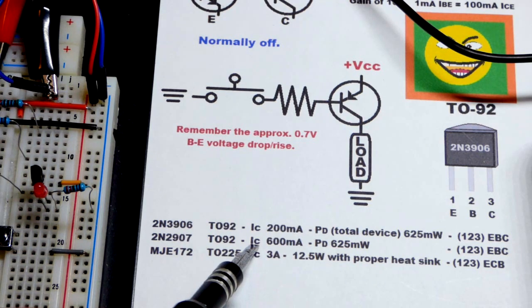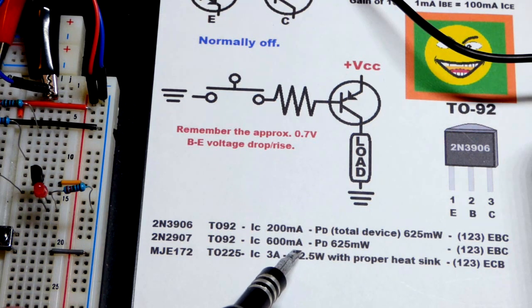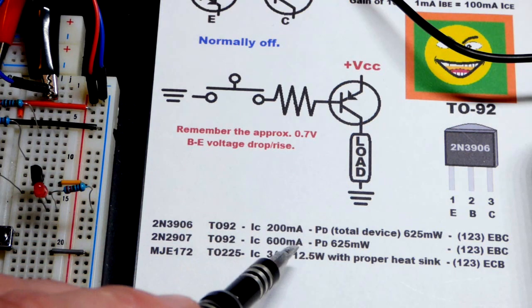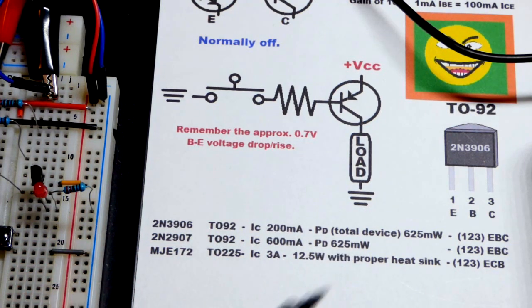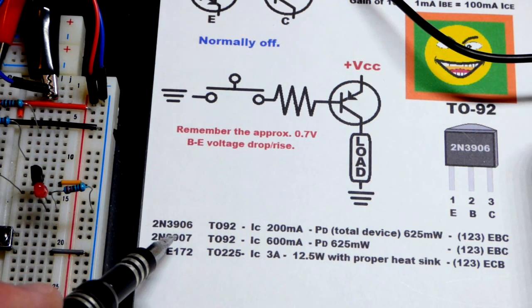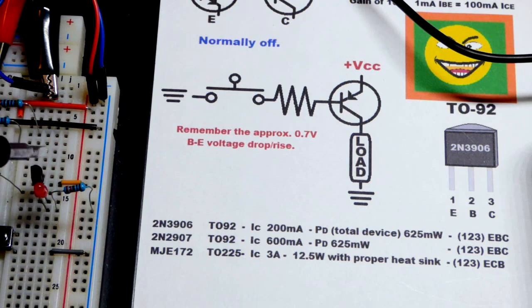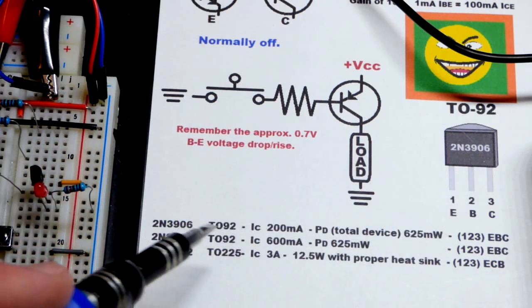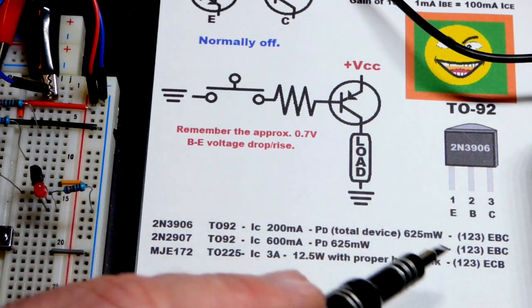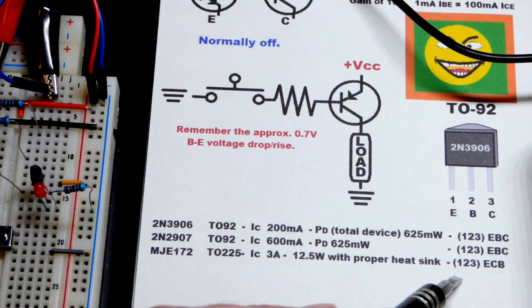And it also can handle the same power rating of a 2N2222 and 2N3906. And that's mostly probably because of the size and material. It's a TO92 package for all four of those transistors I was just talking about. And they all got the same pin layout.